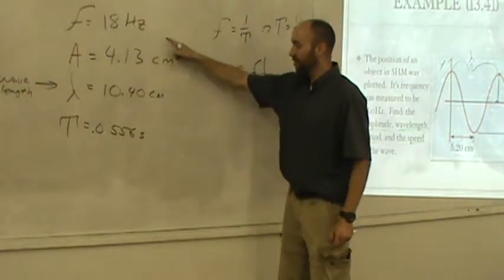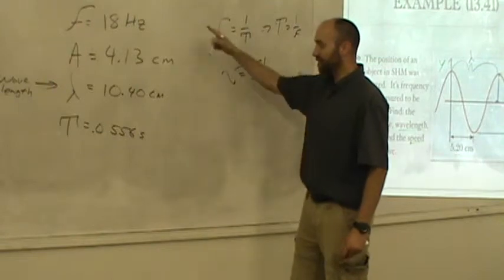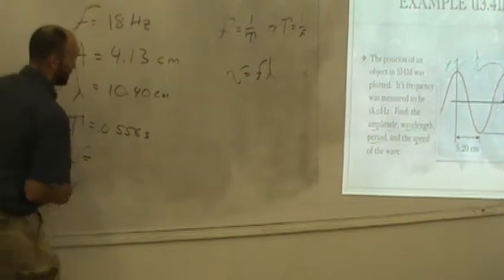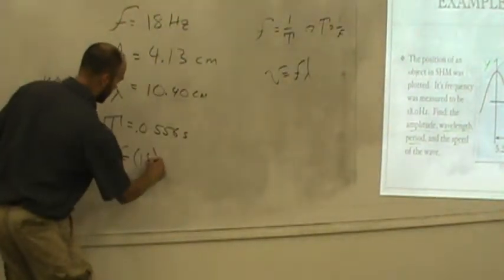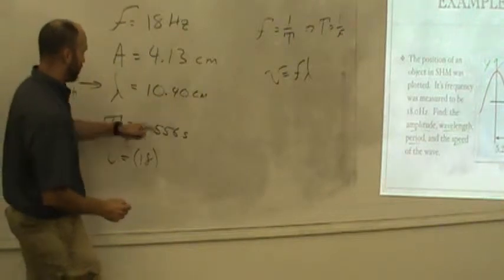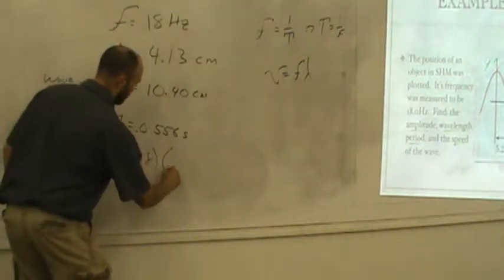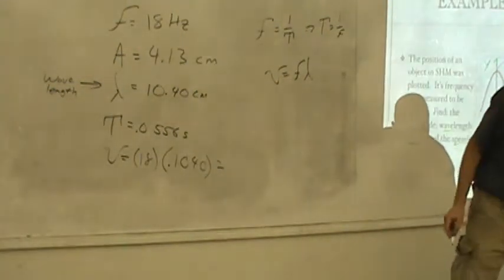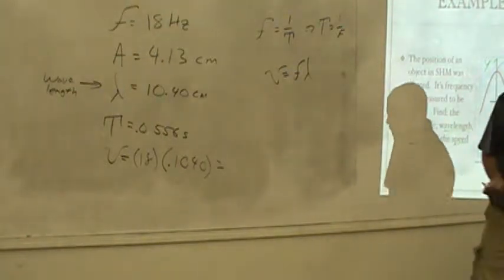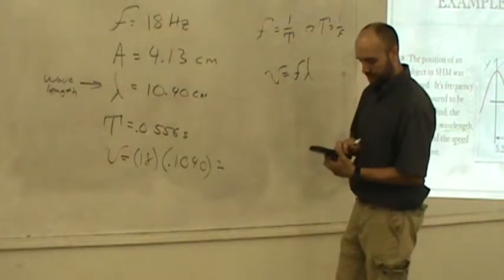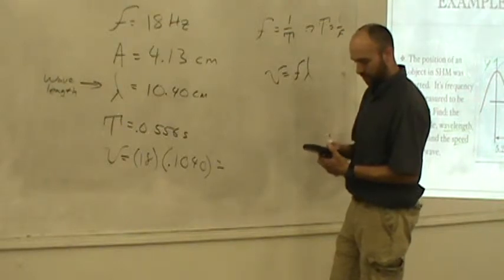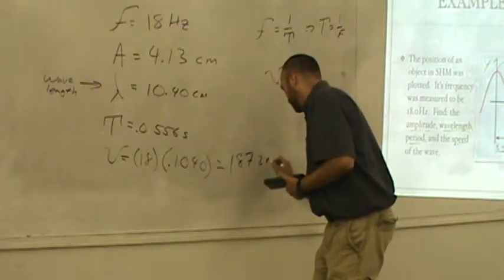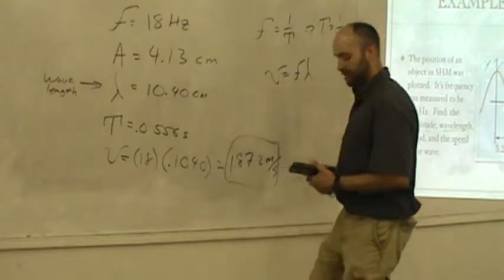So now, we know frequency. We know wavelength. We can get the speed. We just need to multiply these out. And so we can finally get that the speed is equal to the frequency, which is 18, and those are standard units, times the wavelength, which is not standard units. That's going to be 0.104. We multiply that out. Just multiply it. That's going to be 18 times 0.104 is 1.872 meters per second. There we go.